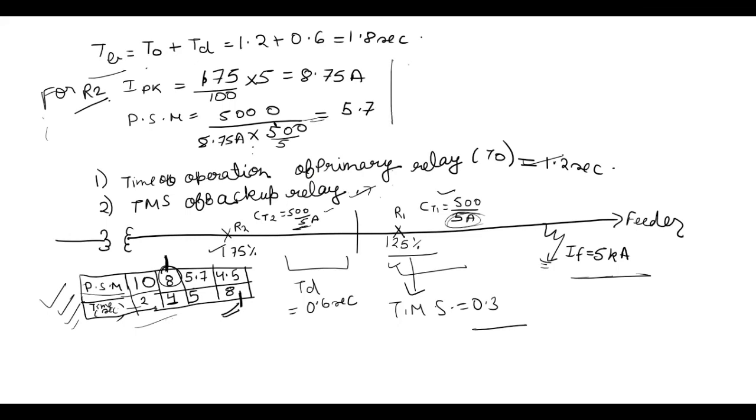So now time of operation T0 which is 1.8 second is equal to TMS into time calculated from IDMT draft corresponding to PSM 5.7. So now PSM 5.7 is this and now we are going to take time as 5. So TMS into 5. Therefore TMS is equal to 1.8 divided by 5 which is equal to 0.36. So TMS for backup relay is equal to 0.36.